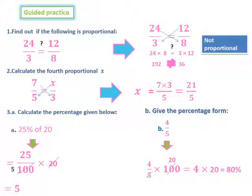Number 3, Part A: Calculate the percentage given below. We have 25% of 20. 25% is equal to 25 over 100. Of means times, and the 20 stays as it is. We simplify 20 and 100. Then, 25 over 5 is equal to 5. Part B: Give the percentage form of 4 over 5. We multiply this ratio by 100. Then, 4 over 5 times 100. We simplify 100 by 5. Then, 4 times 20 is equal to 80%.